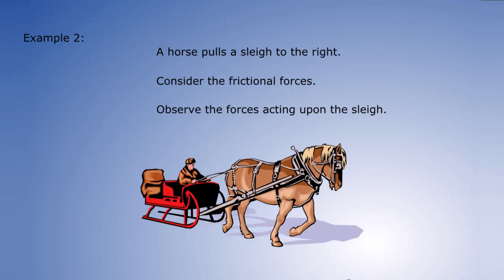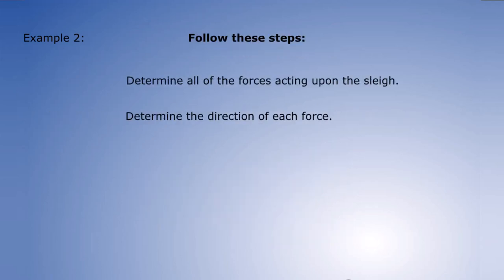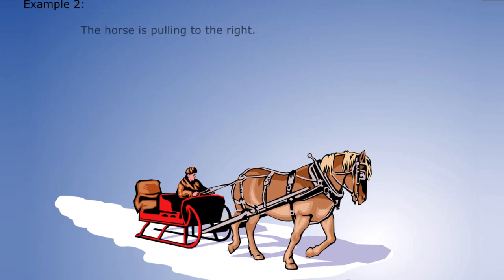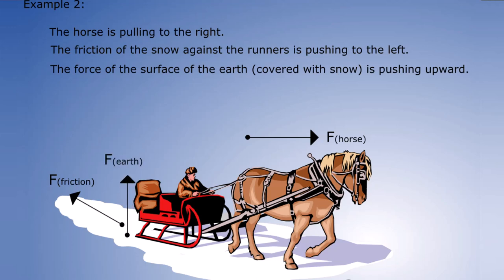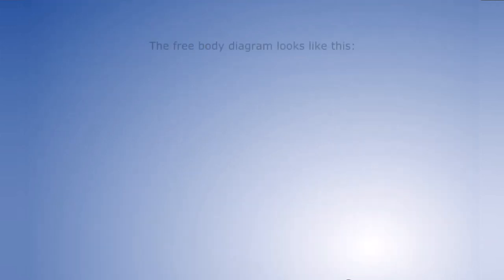Example 2. A horse pulls the sleigh to the right. Consider the frictional forces and observe the forces acting upon the sleigh. The horse is pulling to the right. The friction of the snow against the runners is pushing to the left. The force of the surface of the earth is pushing upward and the force of gravity on the sleigh is pulling downward. The free body diagram looks like this.